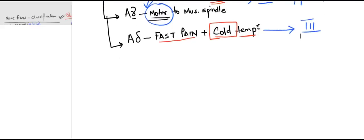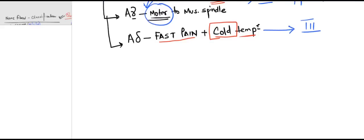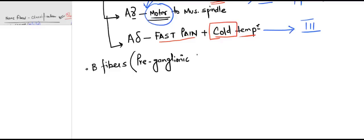After covering the A fibers, let us move to Type B fibers in the Erlanger-Gasser system. The key thing to remember is that these are pre-ganglionic autonomic fibers. Since they are autonomic fibers, they would not be classified in the Lloyd system, because Lloyd only covers sensory classification.